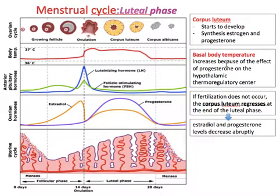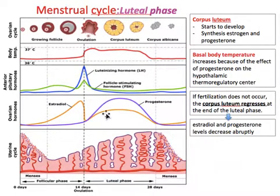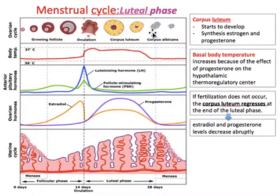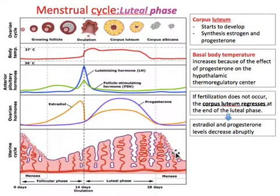In the luteal phase, the corpus luteum is the predominant player. The corpus luteum develops and begins synthesizing both estrogen and progesterone, predominantly progesterone. The increase in progesterone sends a signal to the hypothalamic thermoregulatory center, increasing basal body temperature. If fertilization does not occur, the corpus luteum regresses and becomes the corpus albicans. With its regression, there is a sudden drop in estradiol and progesterone, causing the sloughing off of the endometrium due to lack of estrogen and progesterone stimulation.